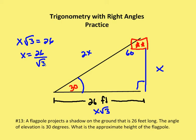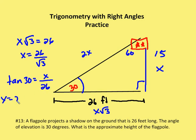Using a calculator, 26 divided by the square root of 3 gives approximately 15 feet. We can also verify this using trigonometry: the tangent of 30 degrees equals X over the adjacent side of 26, so X equals 26 times the tangent of 30 degrees. Typing 26 times the tangent of 30 degrees into the calculator gives the same value of approximately 15 feet.